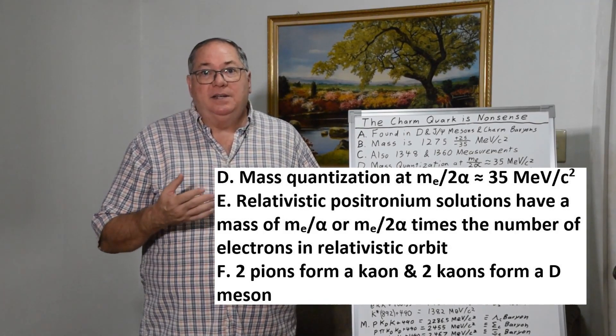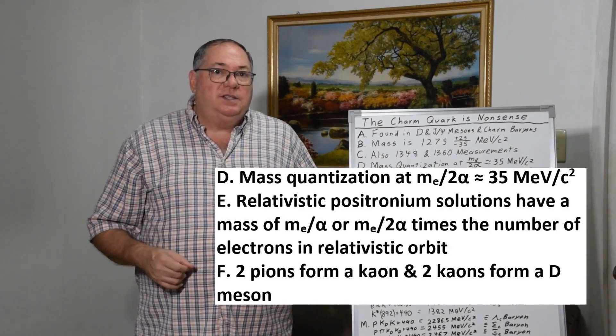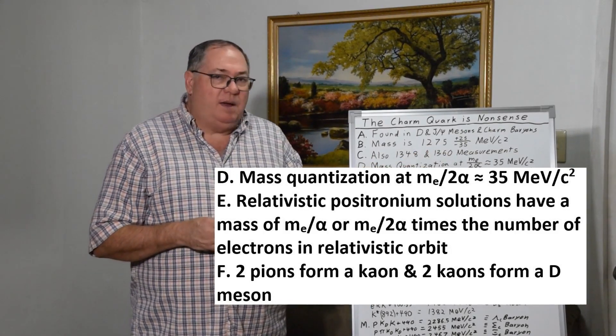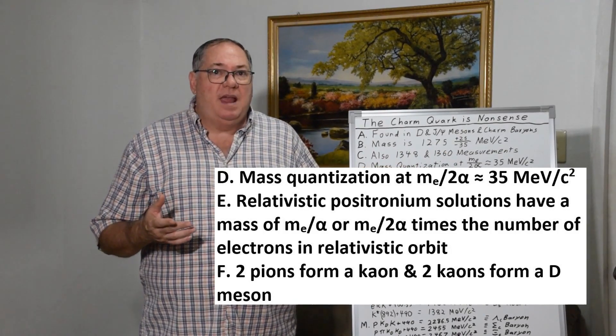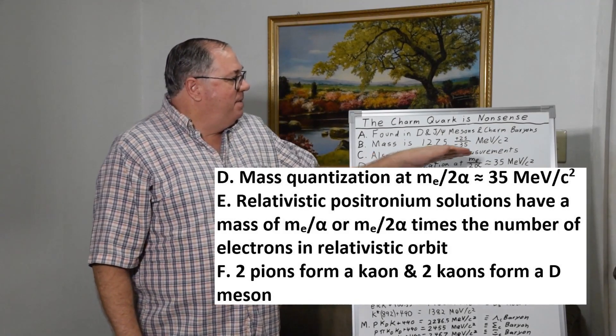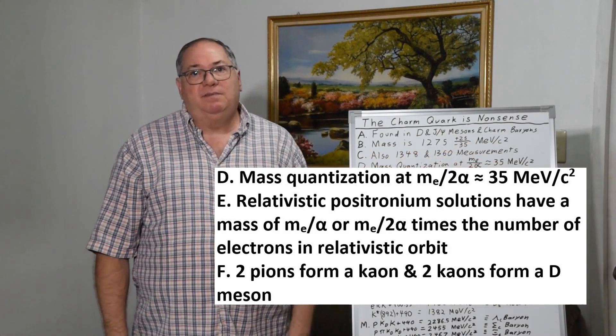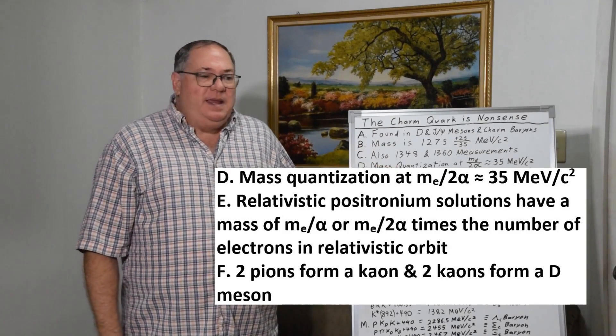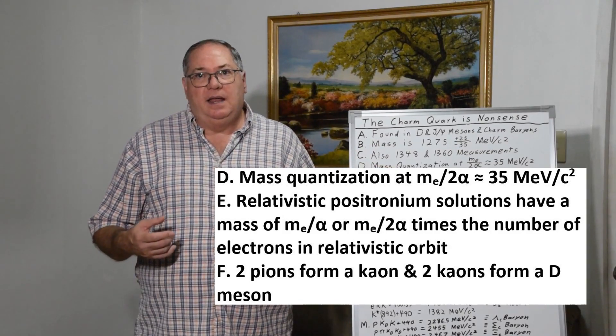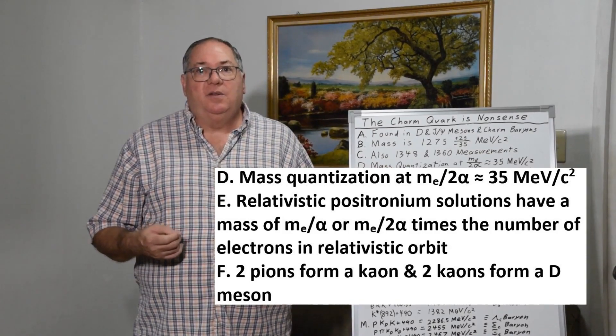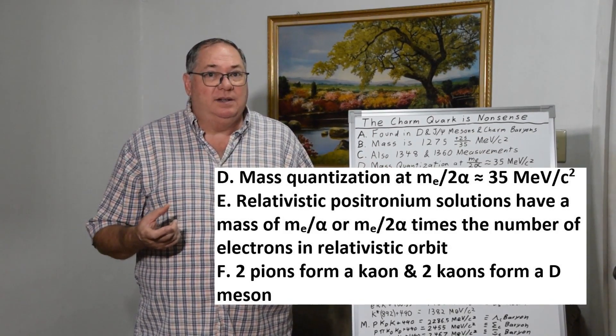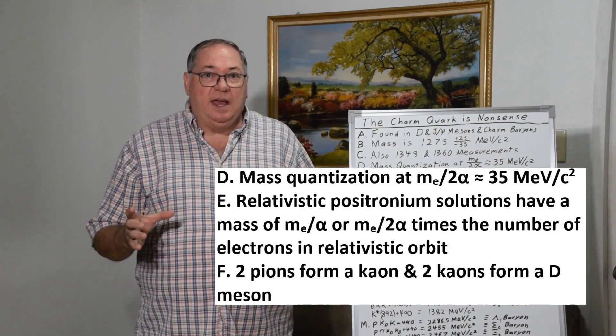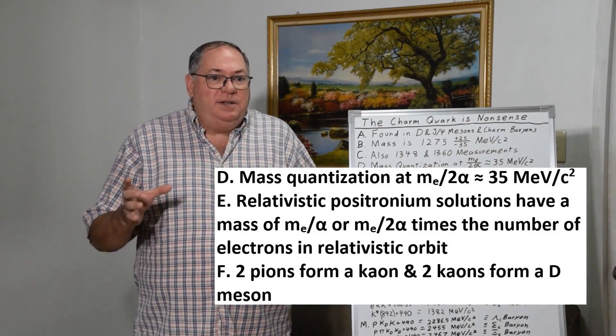Now, Brown redid this solution and he found out the quantizations at 35 MeV/c², which is the mass of the electron divided by two times the fine structure constant. And so we find that these terms show up because all of the heavier particles are quantized based on the mass of the electron divided by two times the fine structure constant, or one times. Some particles are double. Then the important thing to note is that this solution does not only apply to a single electron orbiting a single positron, but if you have groups of electrons and groups of positrons, you get a multiple and you still get a solution.